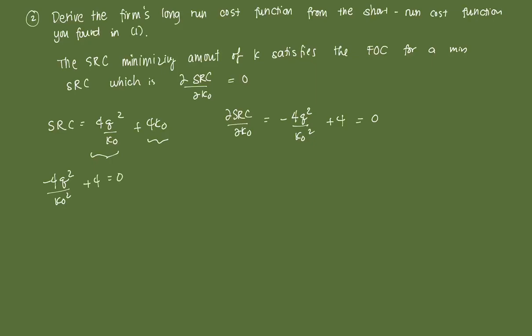Simplifying, we get 4 = 4Q²/K0². Multiplying both sides by 1/4 gives 1 = Q²/K0², or equivalently K0² = Q². Isolating K0, we get the optimal K0 in the short-run equal to Q.